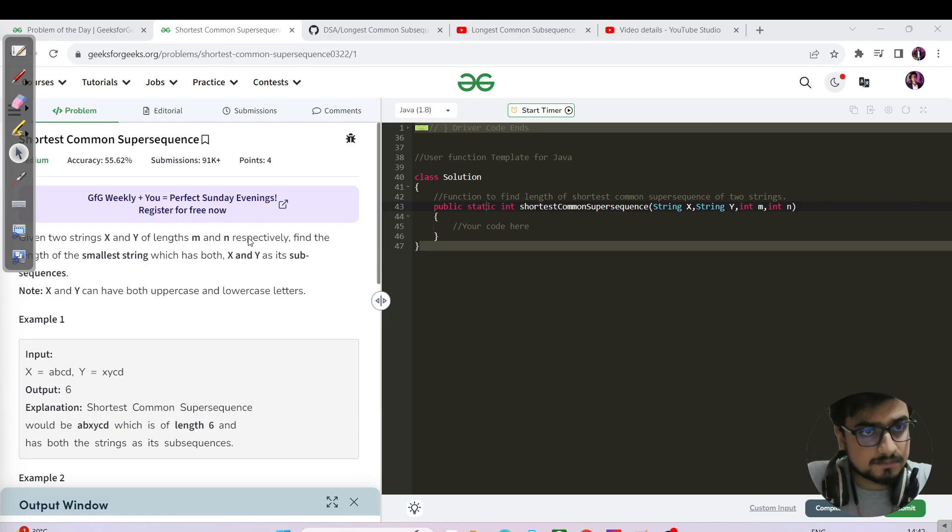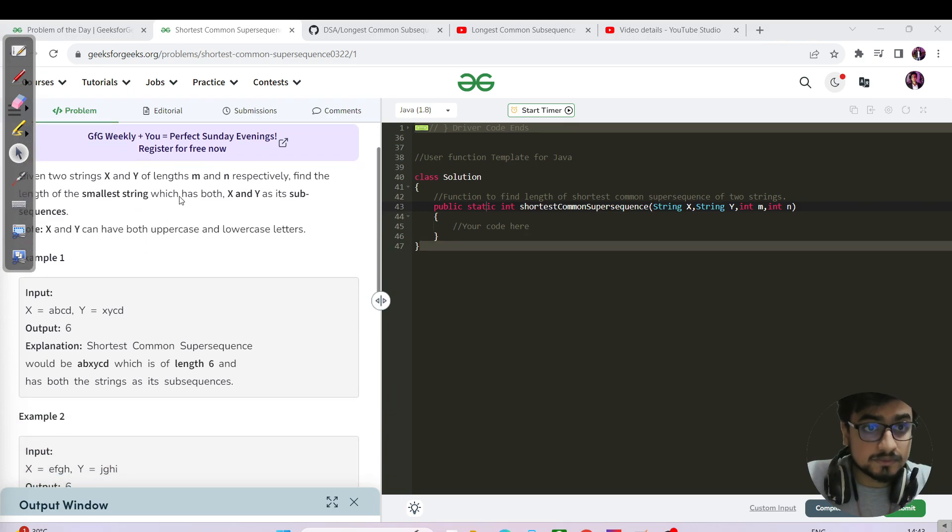Today's question is named Shortest Common Supersequence. What it is saying is that we have two strings X and Y of length M and N, and we need to find the smallest string which has both X and Y as its subsequences.